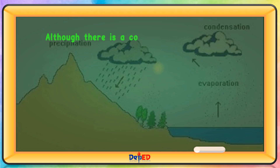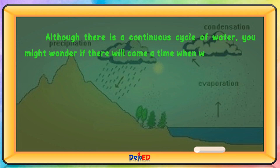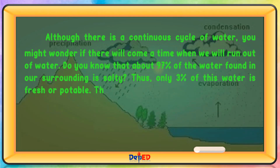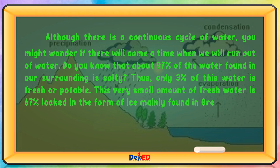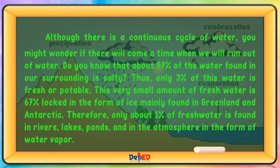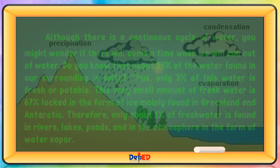Although there is a continuous cycle of water, you might wonder if we will ever run out of water. About 97% of the water in our surroundings is salty, so only 3% is fresh or potable. Of that fresh water, 67% is locked in ice mainly found in Greenland and Antarctica. Therefore, only about 1% of fresh water is found in rivers, lakes, ponds, and in the atmosphere as water vapor.